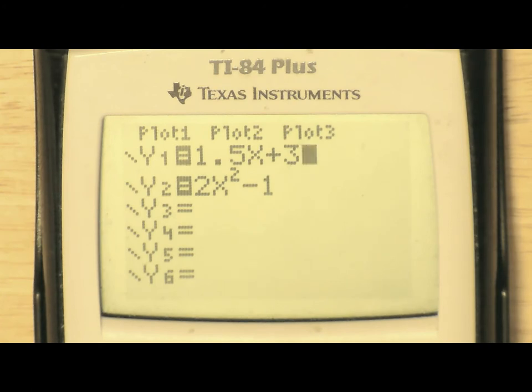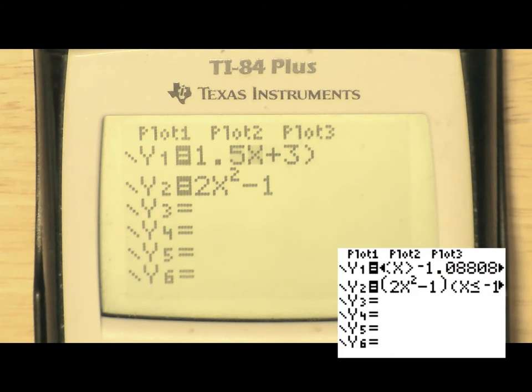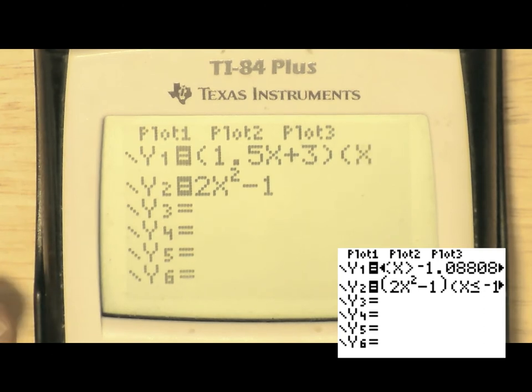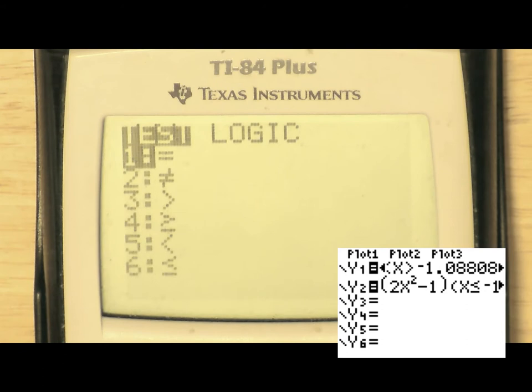We need to enter parentheses for this entire function for y1. That whole function must be multiplied by our restriction. Because when it's 0, it has to not plot. And when it's 1, it must plot.